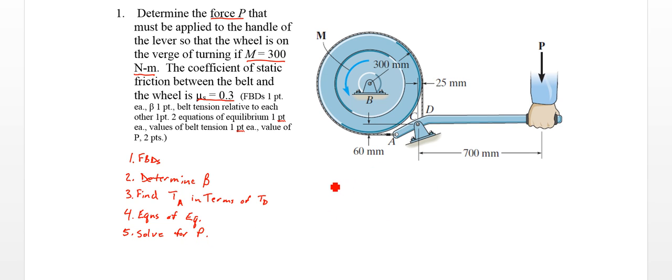So step 1, FBDs. So we'll have a wheel. We've got some point here. Again, we'll have BY, BX. We've got our moment.